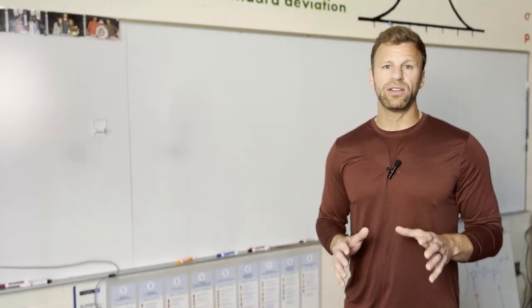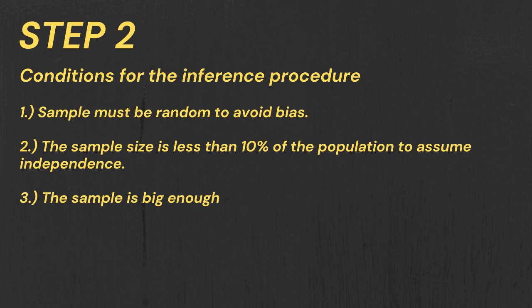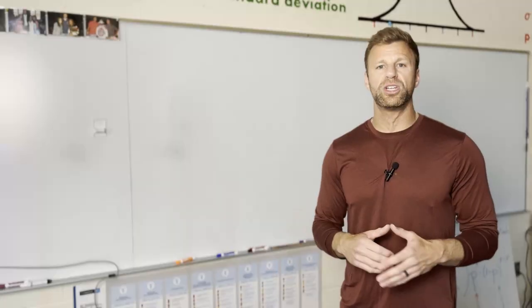Now step two is all about checking those conditions. Sample's got to be random to avoid bias. Sample size has to be less than 10 percent of the population to assume independence, and we need our samples to be big enough. That way we could use an approximate normal or t distribution.